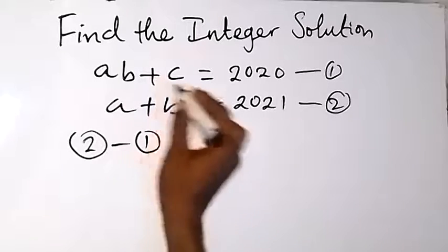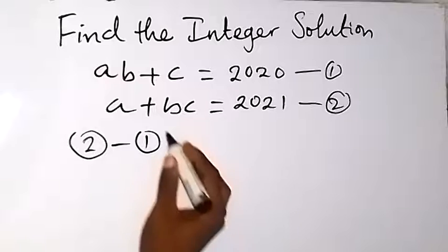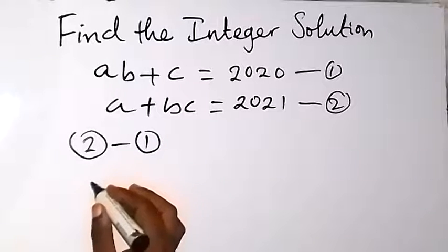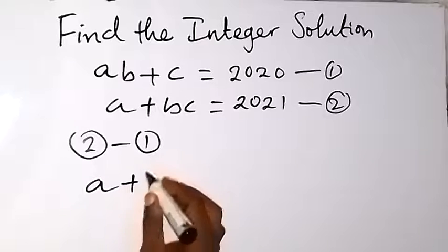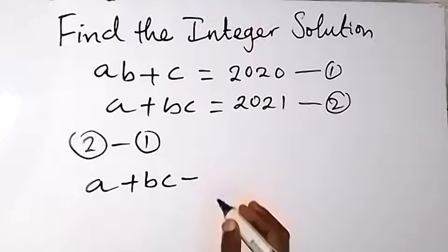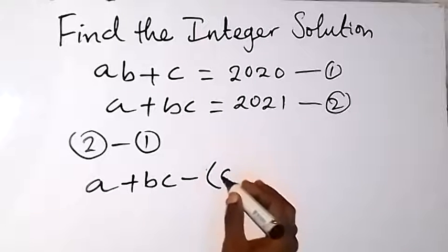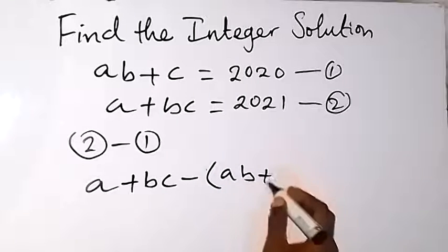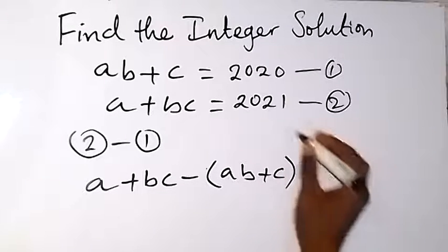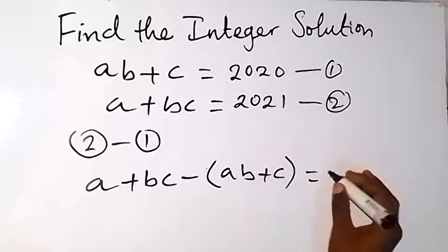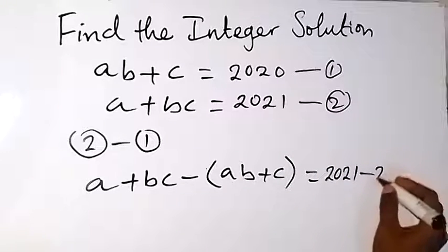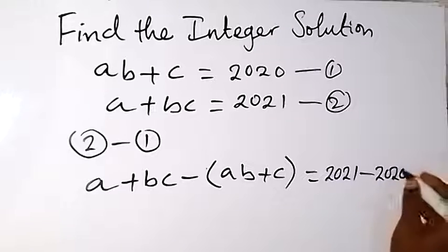That means we are going to have equation 2 first, then we subtract equation 1 from that. So that's A plus B from equation 2, then minus equation 1 which is AB plus C — that's on the left hand side. Then on the right hand side we have equation 2, that's 2021, then minus 2020 from equation 1.